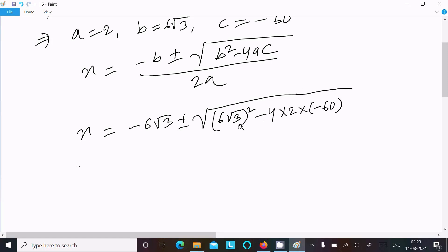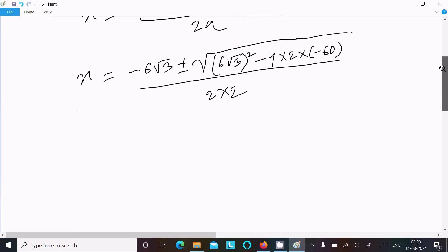Then after here, writing -6√3 ± √((6√3)²). So (6√3)² = 6² × (√3)² = 36 × 3 = 108. Next is -4 × 2 × -60, so 6 × 3 = 18, 1 + 3 into 3 = 9, plus 1 = 10, so 108.